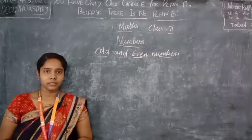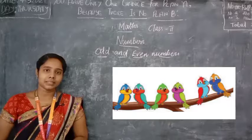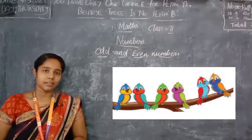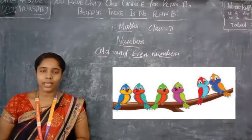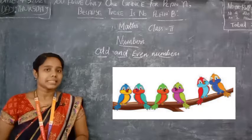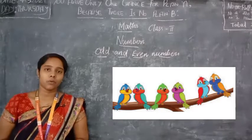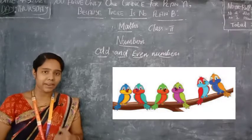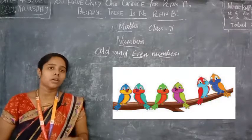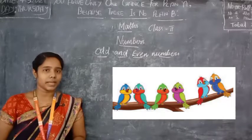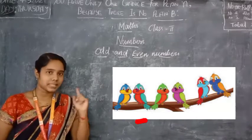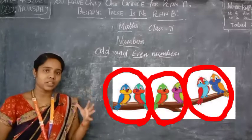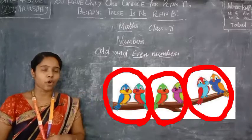Now look at the picture here. We can see six birds sitting on the branch of a tree. How many birds are here? Six birds. Now we are going to pair the birds in sets of two. If we arrange the birds in sets of two, we have to see if any are remaining. So we have the first set, second set, and third set — we have arranged the six birds in three sets of twos.